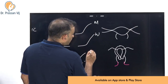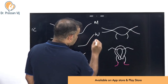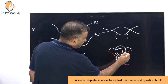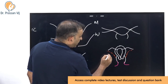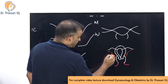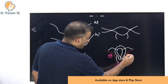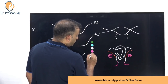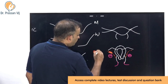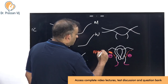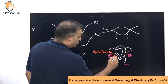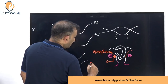The Wolffian duct obliterates in the woman, but the line of obliteration may leave some remnants. Above the ovary, these remnants are known as the epoophoron, and besides the ovary, they are known as the paroophoron.